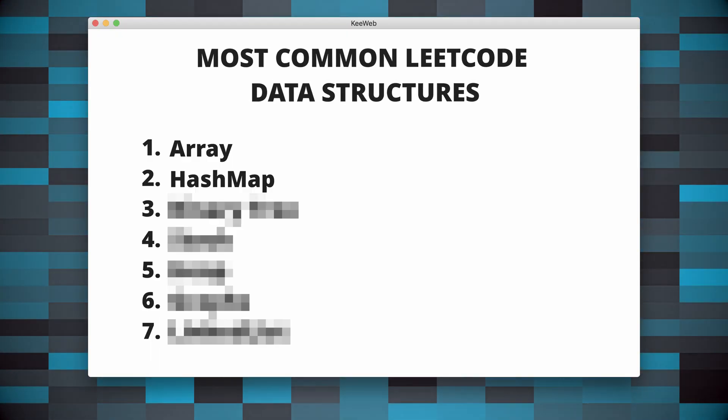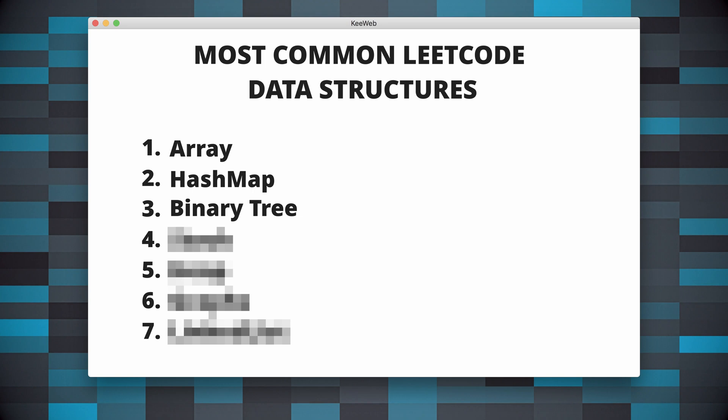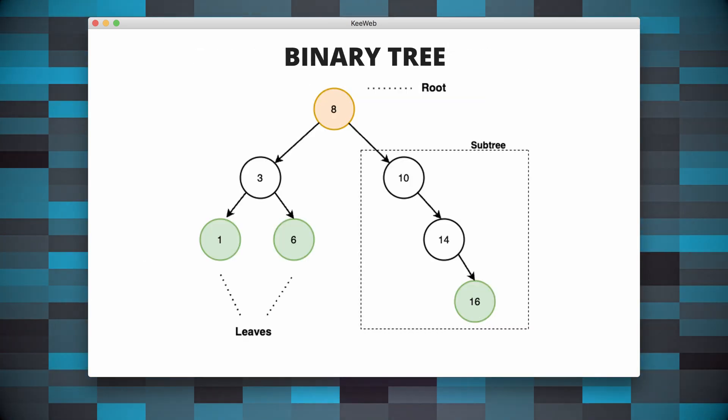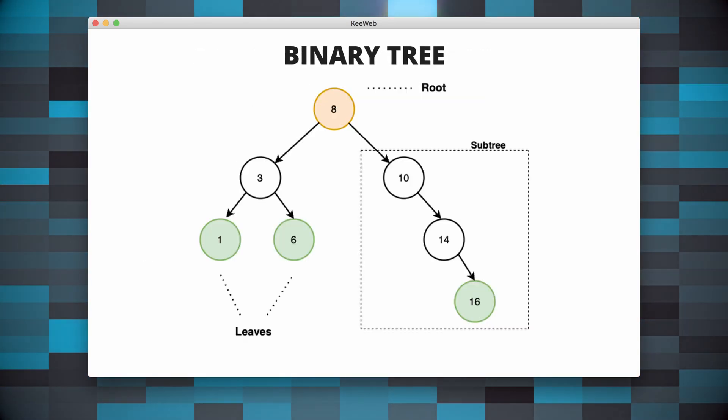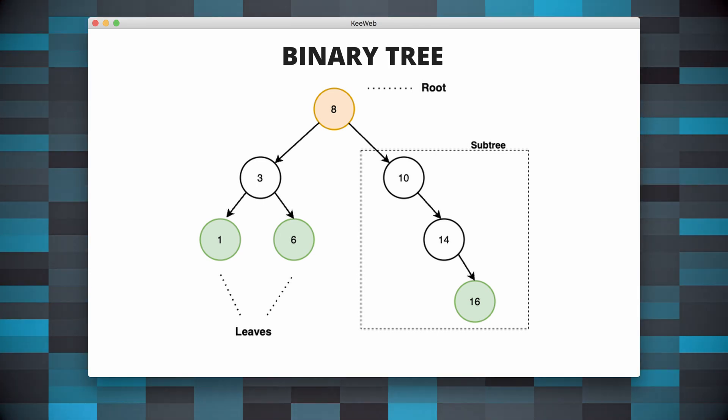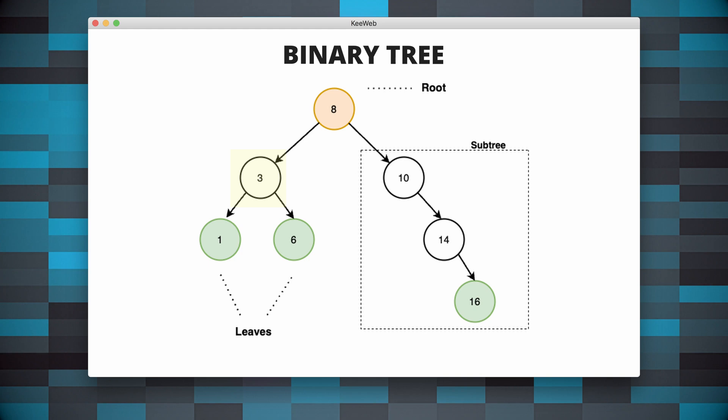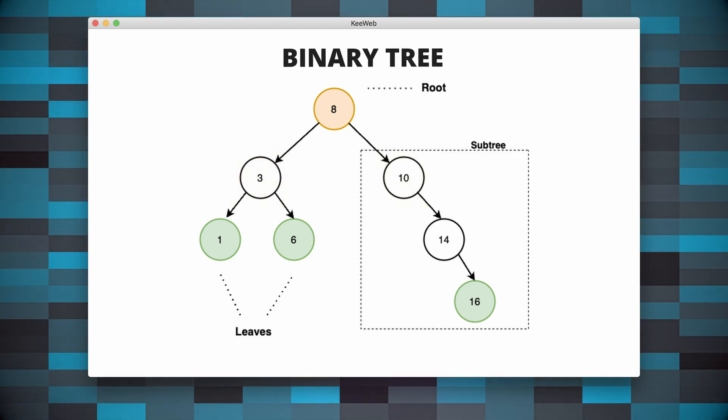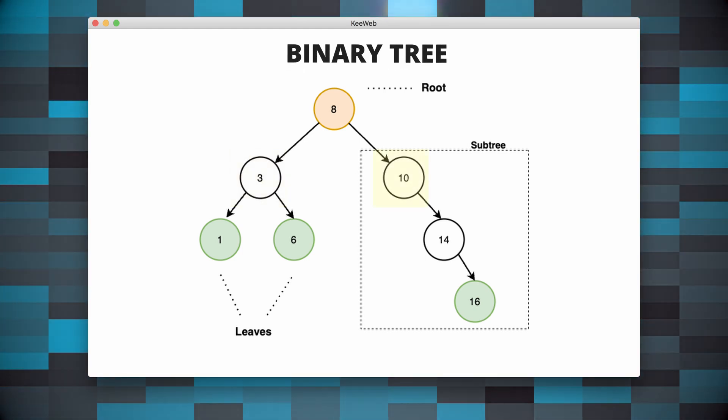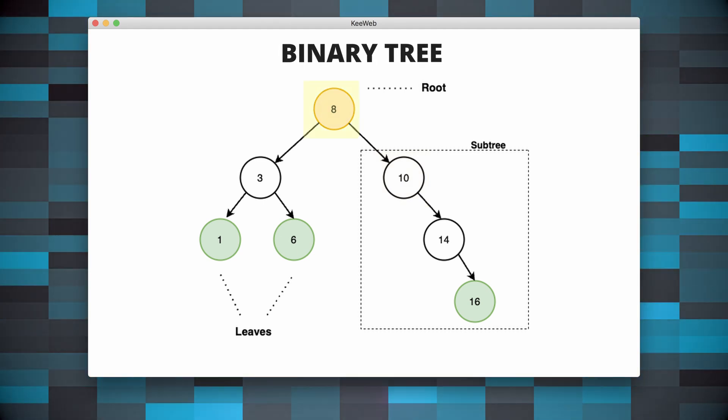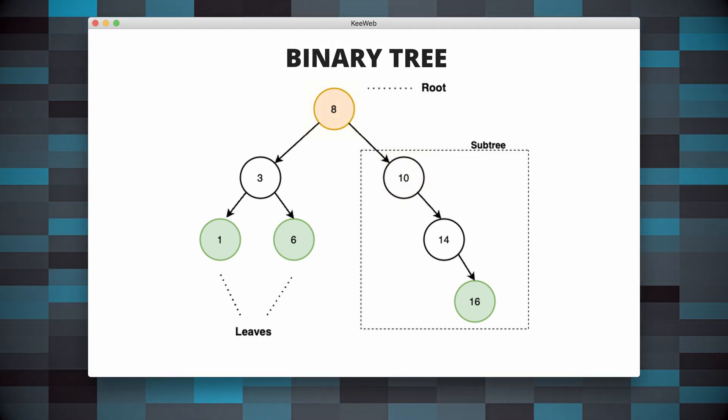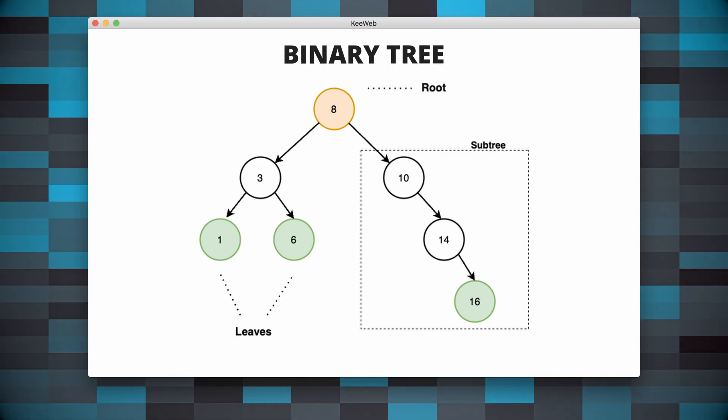Binary trees are another frequently occurring data structure in LeetCode questions. A binary tree is a hierarchical data structure in which each node has at most two children, referred to as the left child and the right child. Each child of a node is the root of a subtree. The topmost node in a tree is called the root. You might have come across binary search trees.